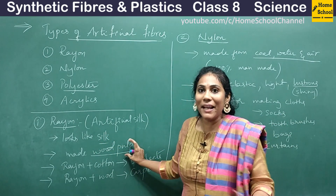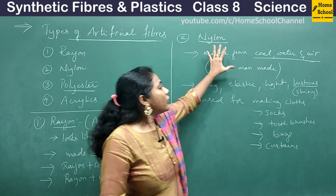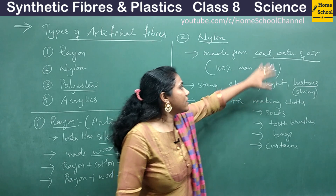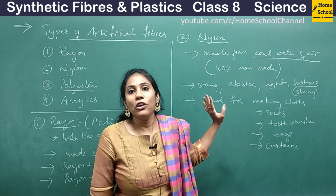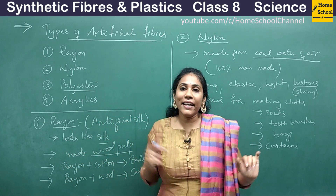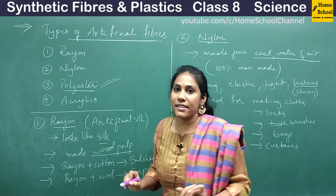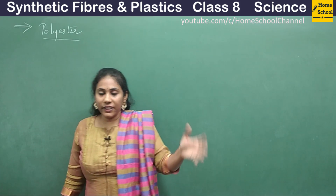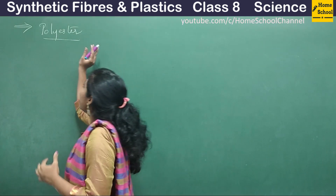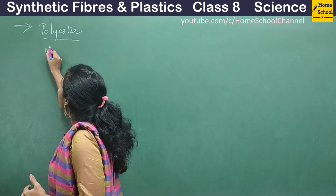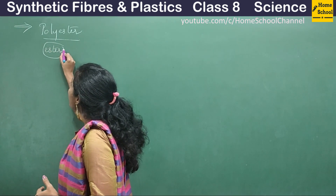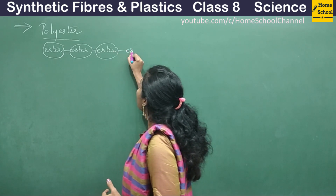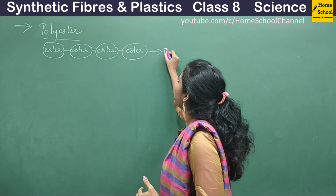So what is the difference between rayon and nylon? In rayon, the main raw material is from a plant source — wood pulp. But in nylon, the starting materials are completely chemicals: coal, water, and air — nothing natural. Now let us go to polyester, a word we commonly hear in day-to-day life.